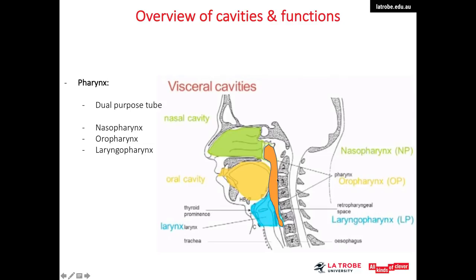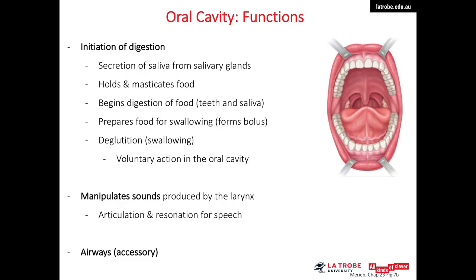The pharynx is located posterior to the nasal cavity, the oral cavity, and the larynx. The pharynx is a dual-purpose tube that assists in both breathing and swallowing. Depending on its location, the pharynx is divided into three parts: posterior to the nasal cavity is the nasopharynx, posterior to the oral cavity is the oropharynx, and behind the larynx is the laryngopharynx. The laryngopharynx communicates with the larynx via the laryngeal inlet, the oropharynx via the fauces, and the nasal cavity communicates with the nasopharynx via the choanae.